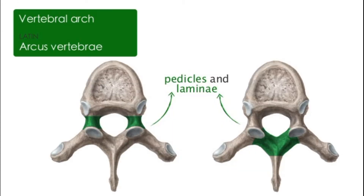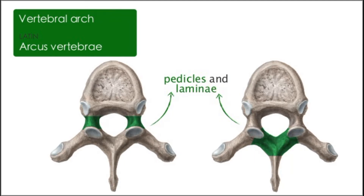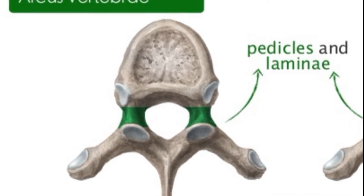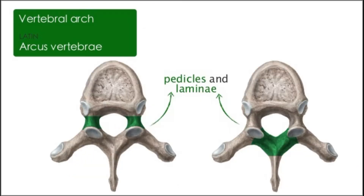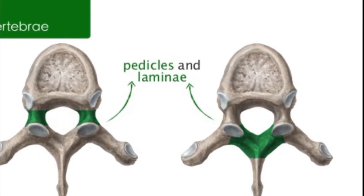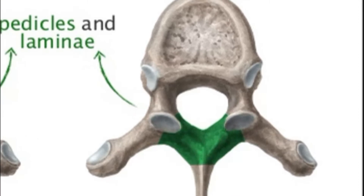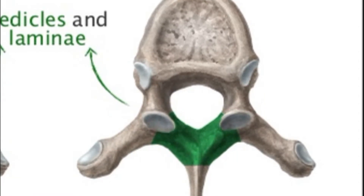You have the vertebral arch, which includes two structures: the pedicles and the laminae. There is a surgical procedure known as laminectomy, where the surgeon will cut through the laminae to access the spinal nerves or the spinal cord.